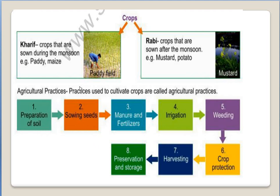In this slide, I have shown that crops are grown according to the season. Crops sown during the monsoon are called kharif crops, and crops sown after the monsoon are called rabi crops. Examples given are paddy and maize for kharif crops, and mustard and potato for rabi crops. According to the season, we mainly have two types of crops — kharif and rabi — though there is also a third variety called zaid crops.